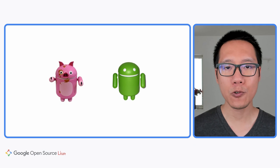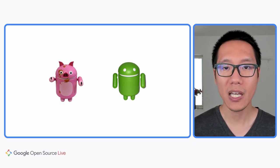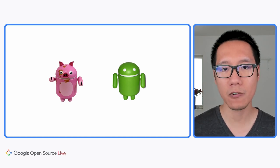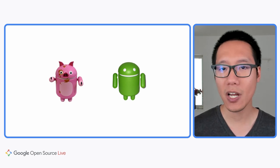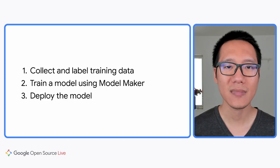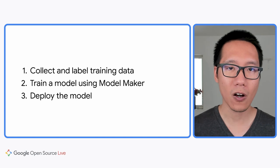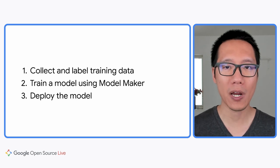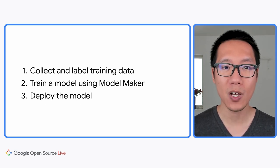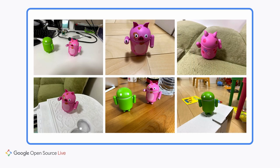Let me give you an example. The pre-trained object detection model can recognize 70 different types of objects, but it can't recognize the Android figurines that I have. So if I want to build an app to recognize these Android figurines, I'll need to train a custom model. There are three steps: first, collect and label the training data; then train a custom object detection model using TensorFlow Lite Model Maker; and finally, deploy the model by replacing the model downloaded from TensorFlow Hub with the new custom model. You can start with a dozen images for each type of object to train a prototype model.